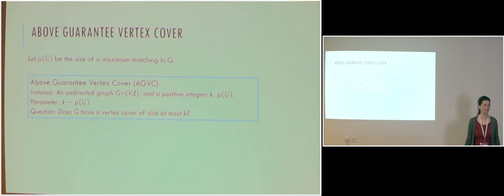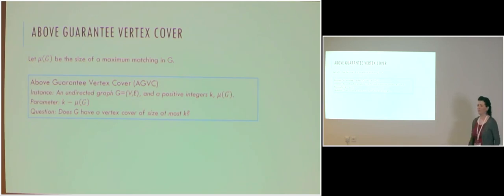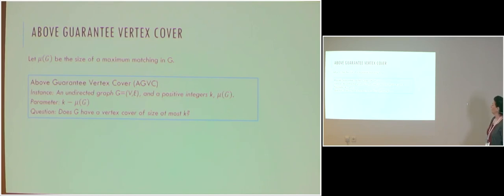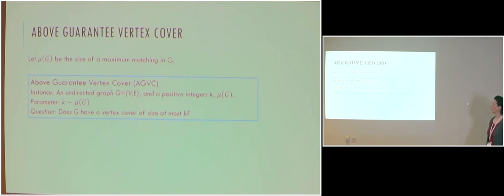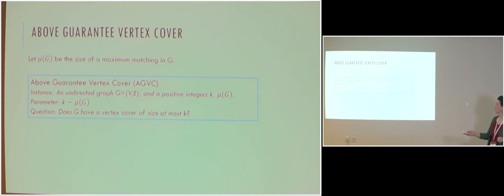Let's return to our favorite problem and look at above-guarantee vertex cover. The maximum matching size is a lower bound for the minimum vertex cover; let's denote this size by μ(G). In above-guarantee vertex cover, we are given an undirected graph and a positive integer K, and the parameter is K minus μ(G). The question is does G have a vertex cover of size at most K?